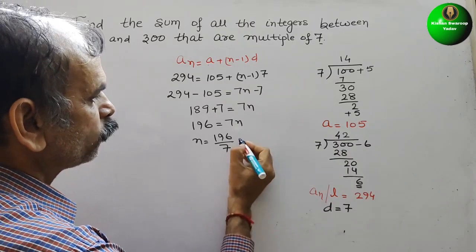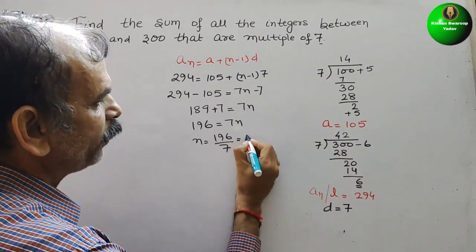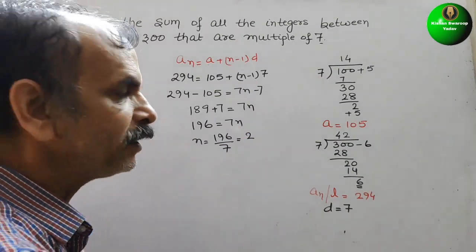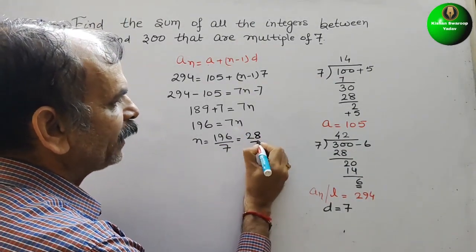196 by 7. Just divide it. So if you divide that, you will get 2 times is 14, 5, 6, 15, 56. That it means 8 times. So N is 28.